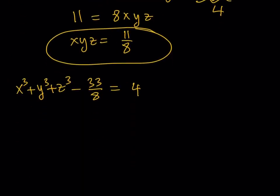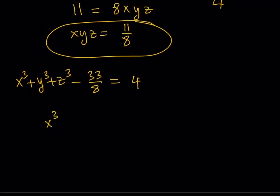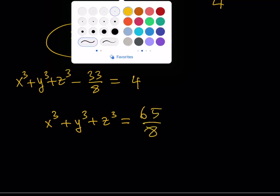And what does this mean? It means that we are almost done. So now we have x cubed plus y cubed plus z cubed is equal to four plus 33 eighths. And if you make a common denominator, that should be 32 plus 33, which is 65 over eight. And that brings us to the end of this video.